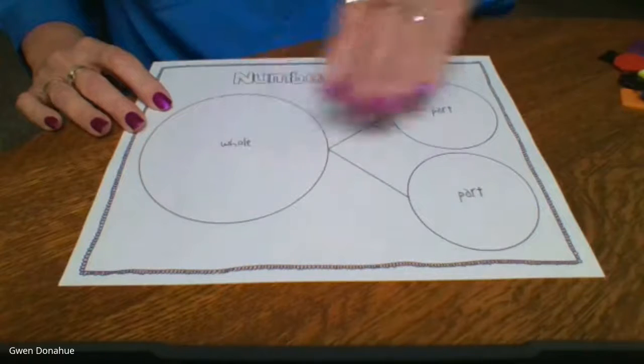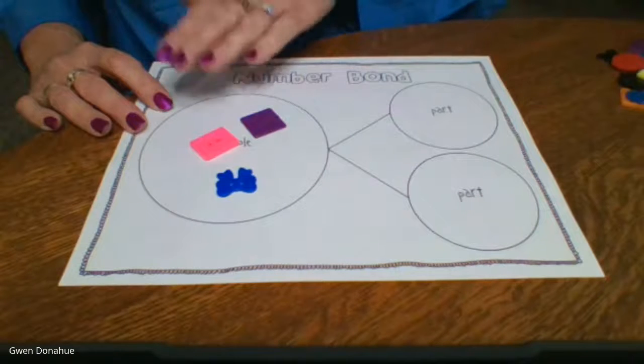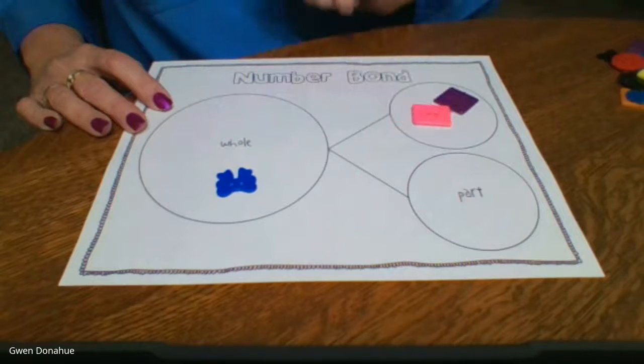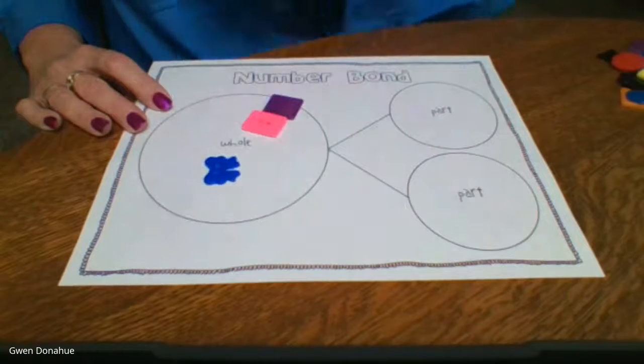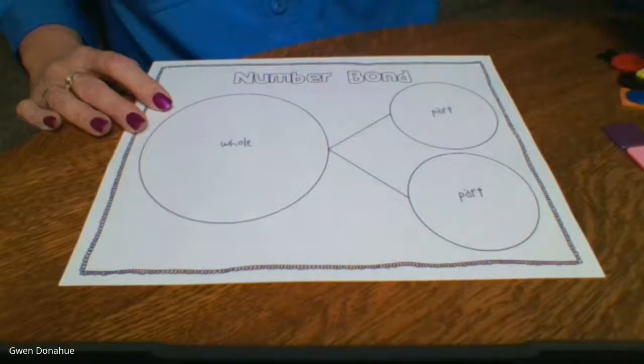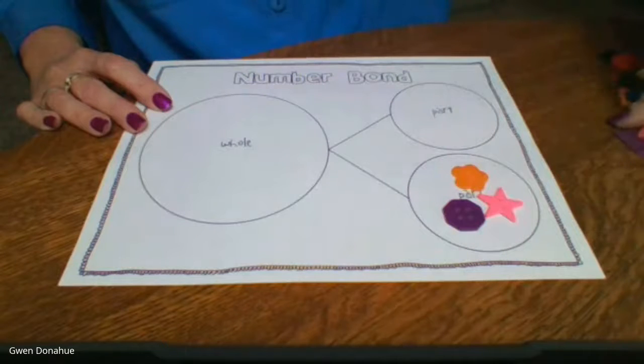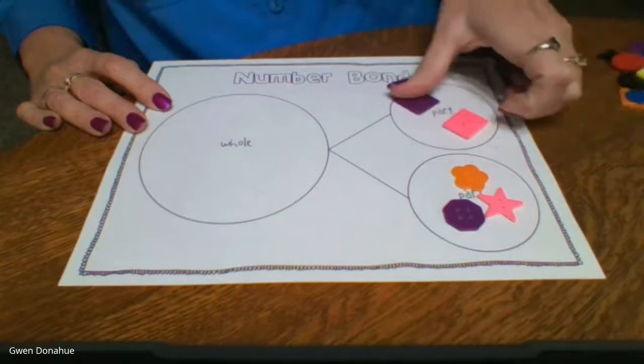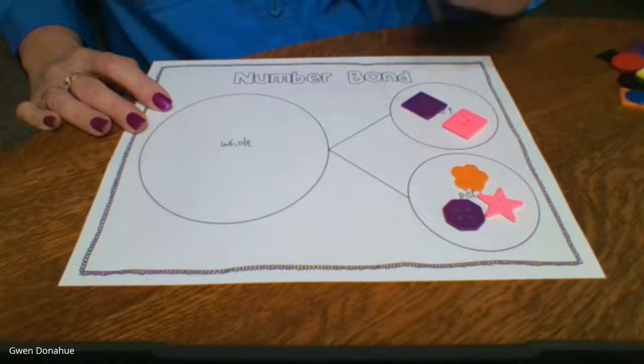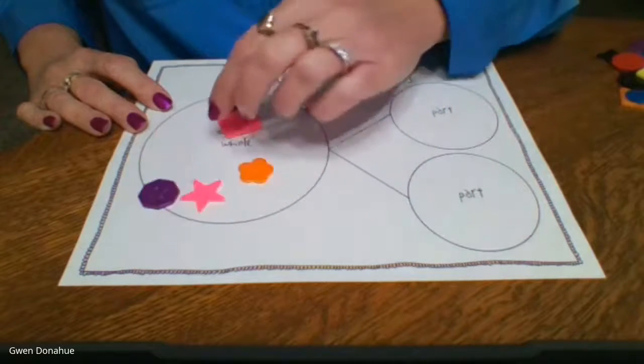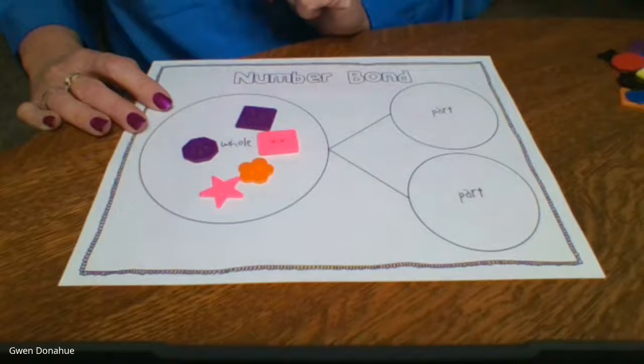Our whole number might be three, and we can make three by using two buttons and one button would give us three buttons. So if part of my number is three and part of my number is two, if I put two and three together, I'm going to end up with my whole thing. The number is going to end up to be five.